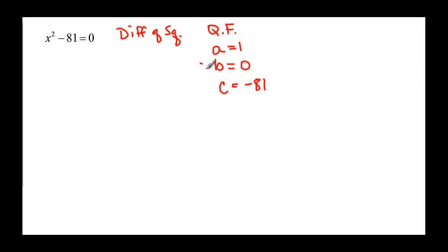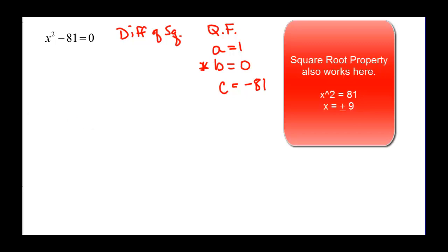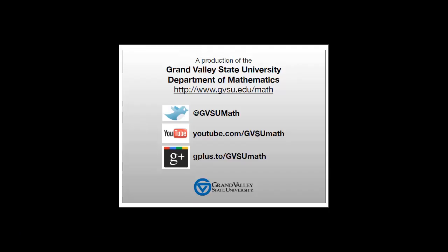So you've got to be careful when you don't have a b. The square root property also works here. We could bring the 81 to the other side and then we'd have x squared equal 81, so x would equal plus or minus 9.